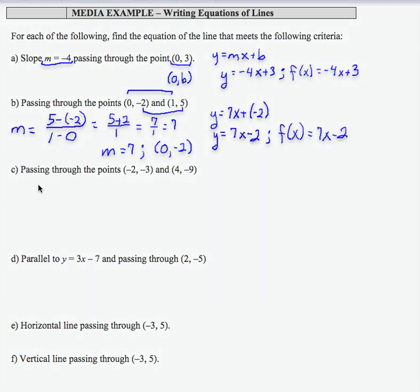For part c, I want to write the equation of the line that's passing through these two ordered pairs. Again, I must find my slope: negative 9 minus negative 3 over 4 minus negative 2, which is negative 9 plus 3 over 4 plus 2, which is negative 6 over 6, or negative 1.